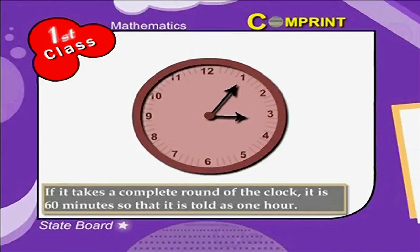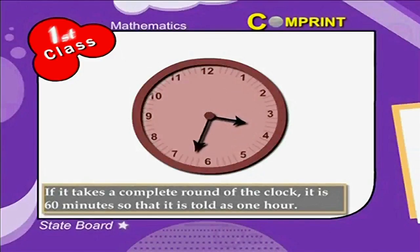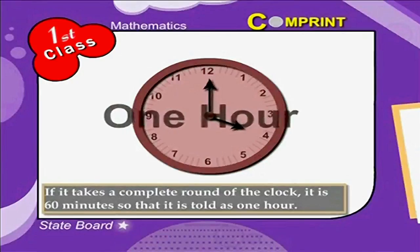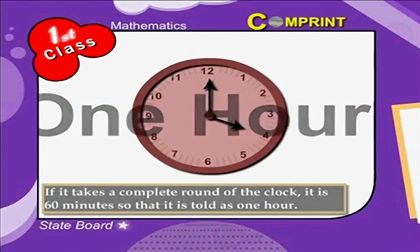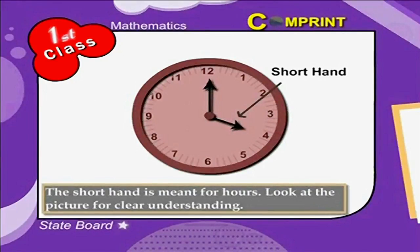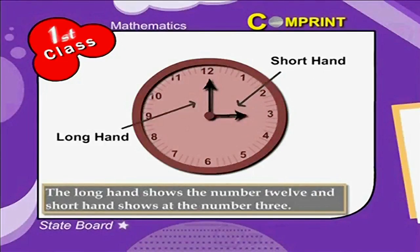If the long hand takes a complete round of the clock, it is 60 minutes, and that is told as 1 hour. The short hand is meant for hours. Look at the picture for clear understanding.